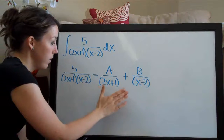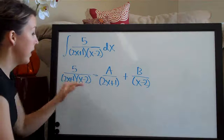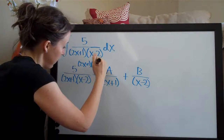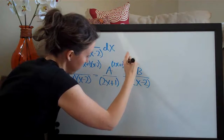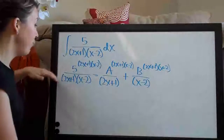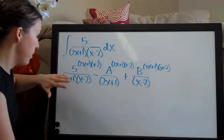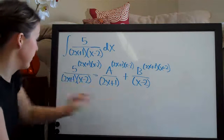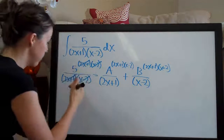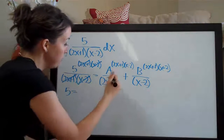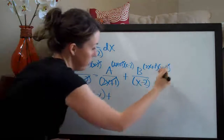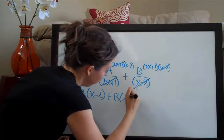Now that you've written this out, what you want to do is multiply each of these terms by the whole denominator, (2x+1)(x-2). You multiply each term by the denominator and what you'll see is that we're going to be canceling terms. The (2x+1) and (x-2) will cancel on the left, leaving just 5. Then (2x+1) cancels on the A term, leaving A(x-2), and (x-2) cancels on the B term, leaving B(2x+1). So: 5 = A(x-2) + B(2x+1).